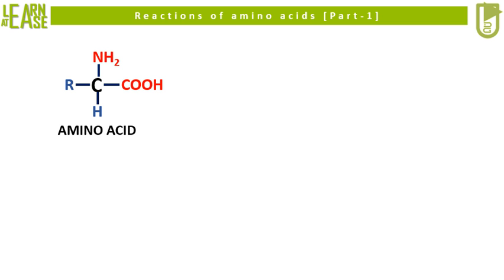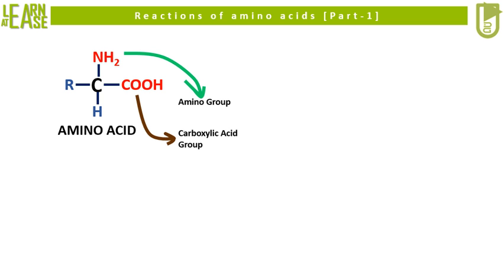Amino acids are the group of organic biomolecules that possess two oppositely charged functional groups covalently bounded to the same carbon atom. These two functional groups are: 1. Amino group, which is positively charged, and 2. Carboxylic group, which is negatively charged.